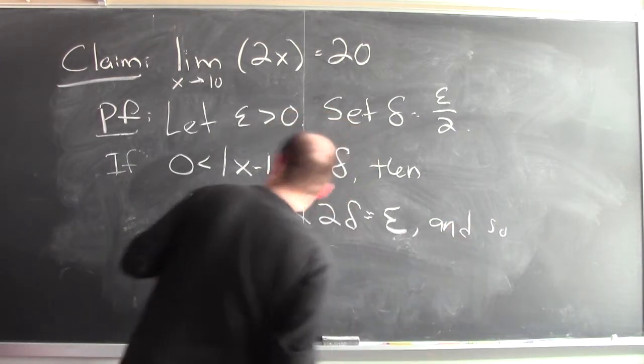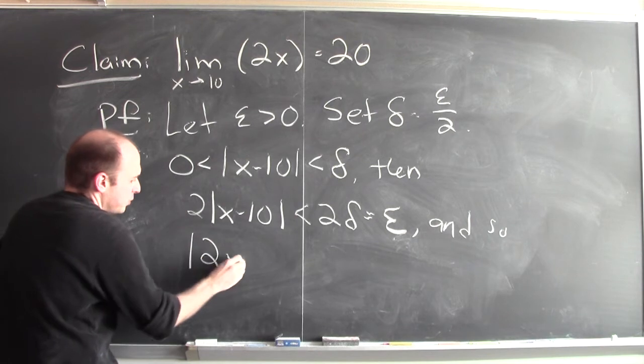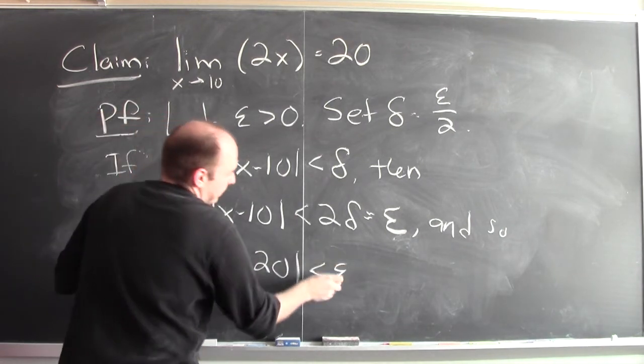And so 2 times the absolute value of x minus 10, that's the absolute value of 2x minus 20. And that's less than epsilon.